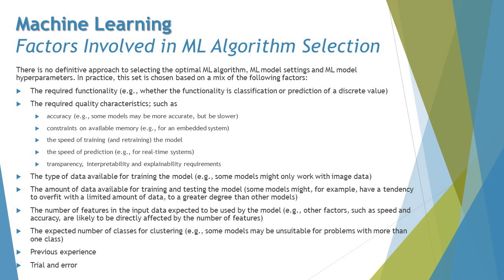Factor number one is the required functionality — the most important thing is understanding what your ML model should be able to do. The algorithm is the base architecture of your ML model driving all its functionalities, whether that is classification, prediction, or discrete value output. Factor number two is the required quality characteristics, such as accuracy. Some models may be more accurate but slower, so you need to decide whether slower but more accurate results are acceptable.